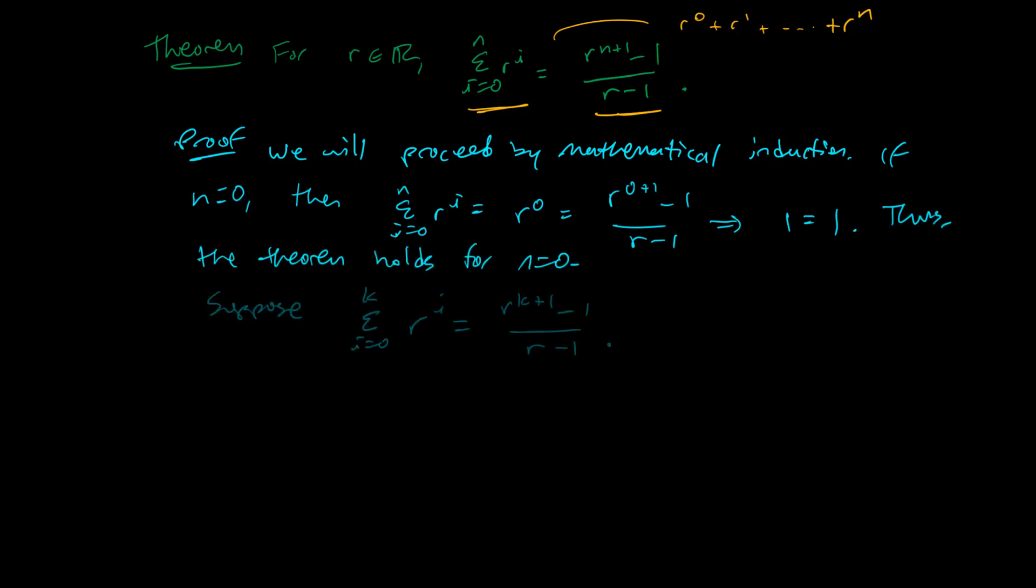Now from there, let's suppose that our summation i going from 0 to k of r to the i power equals r to k plus 1 minus 1 over r minus 1. We first covered our base case here. Secondly, now we are applying what we call the induction hypothesis.